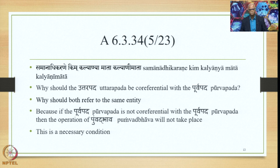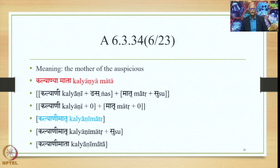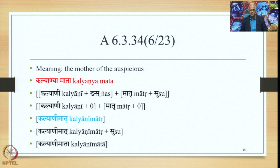The meaning of the example is 'the mother of the auspicious one' — Kalyanyaha Mata, where Mata is mother and Kalyanyaha means 'of the auspicious lady.' The alaukika vigraha is Kalyanyi plus Ngas plus Matru plus Su. Samasa Saudhnya takes place — this is a Shashti Tatpurusha Samasa. Then Pratipadika Saudhnya happens, Supodhatup Pratipadika Yoha applies and deletes both the Sups. So we have Kalyanyi plus zero plus Matru plus zero, giving the compound output Kalyanyi Matru, and then adding suffix Su yields the form Kalyani Mata.